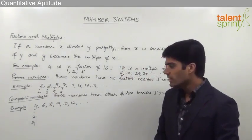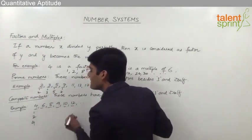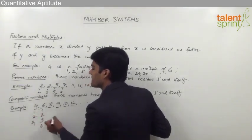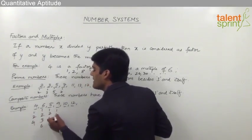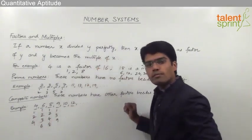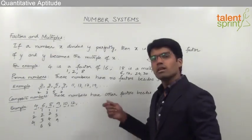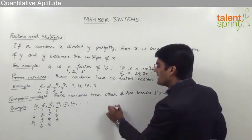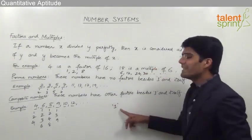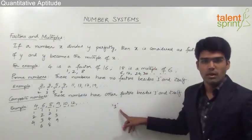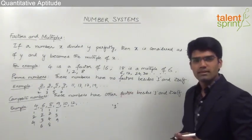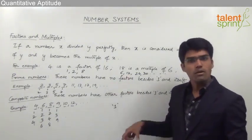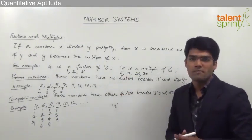Similarly, the factors of 6 are 1, 2, 3 and 6; for 8 we have 1, 2, 4 and 8; for 9 we have 1, 3 and 9. All these numbers have more than 2 factors, so they are called composite numbers. One important point to observe is that the number 1 is an exception — it is neither prime nor composite. So except 1, all remaining natural numbers can be classified as either prime or composite depending on the number of factors they have.